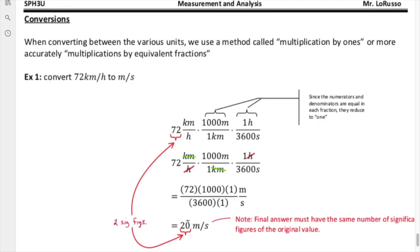Next topic of discussion: conversions, which means converting from one unit to another. When we convert between various units, we use a method that I call multiplication by ones, or more accurately, multiplication by equivalent fractions. Essentially what you're doing is you're not affecting the actual value because you're effectively multiplying by one all along, but you are converting the units.